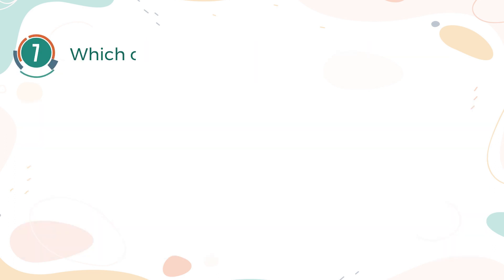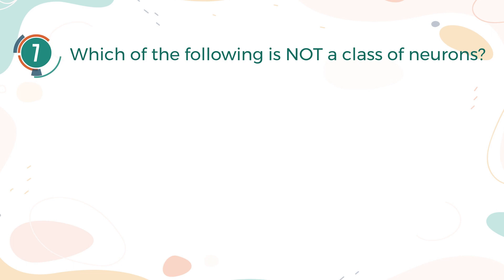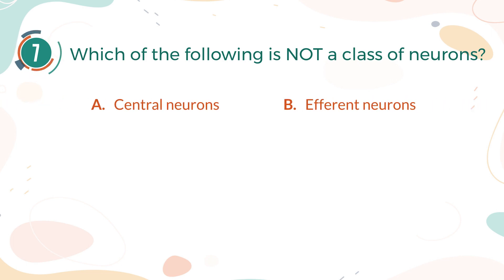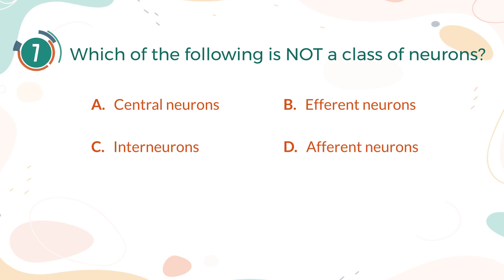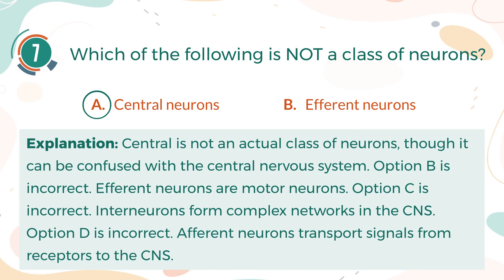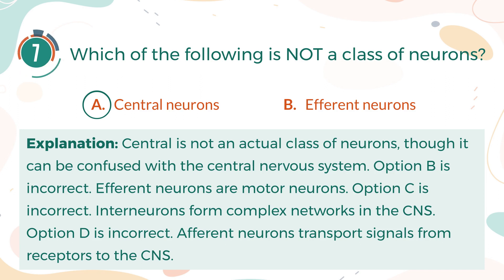Number 7. Which of the following is not a class of neurons? The correct answer is A. Central neurons. Explanation: Central is not an actual class of neurons, though it can be confused with the central nervous system. Option B is incorrect. Efferent neurons are motor neurons. Option C is incorrect. Interneurons form complex networks in the CNS. Option D is incorrect. Afferent neurons transport signals from receptors to the CNS.